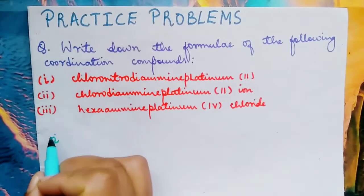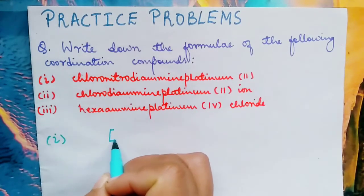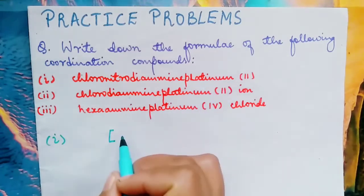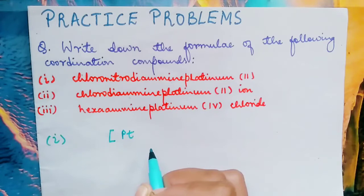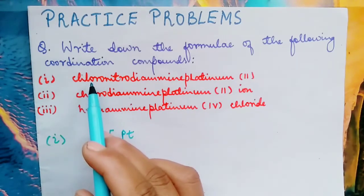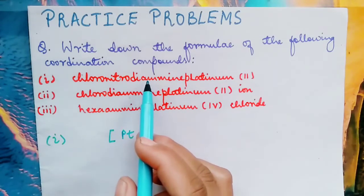For the coordination entity, we have the square bracket, right? First, the central metal atom platinum, followed by the ligands. So here we have three types of ligands: chloro, nitro, and diamine.